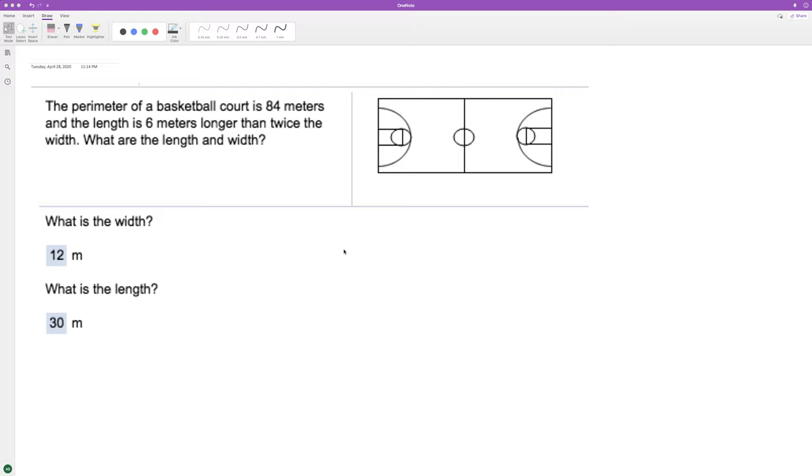A basketball court that's got a perimeter of 84 meters, but it's got a length that's six meters longer than twice the width. So this is a little bit of a tricky problem.